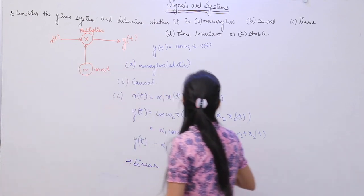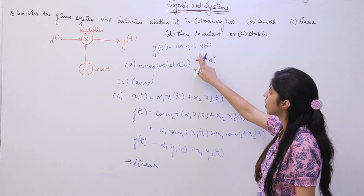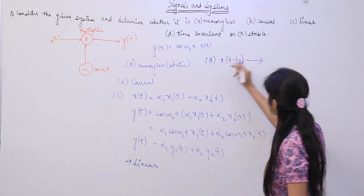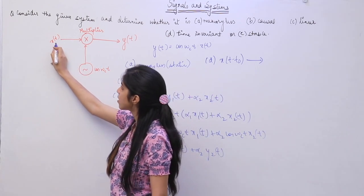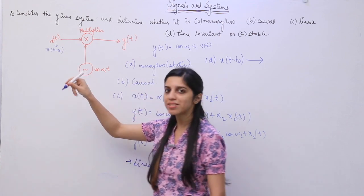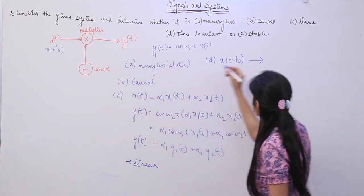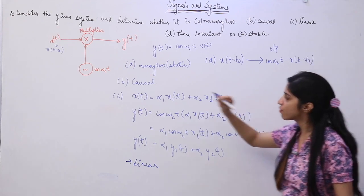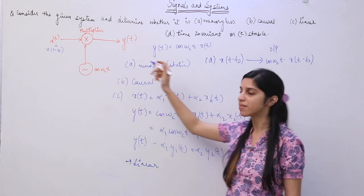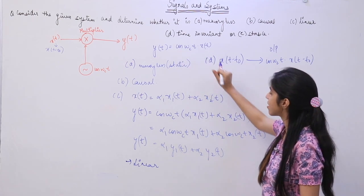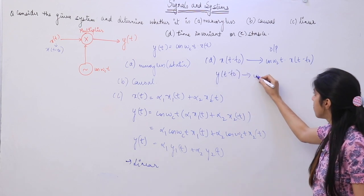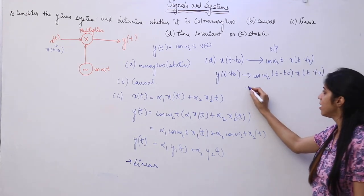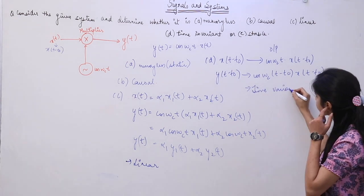Now they are asking to check time invariance. Firstly, we produce a delay of t0 in the input. If the input gets delayed by t0, the output is going to be cos(ωct)·x(t−t0) — still multiplied with cos(ωct) only. Whereas if you produce a delay of t0 in the output, every independent variable is replaced by t−t0, which makes it cos(ωc(t−t0))·x(t−t0). Since both are not equal, this system is time variant.